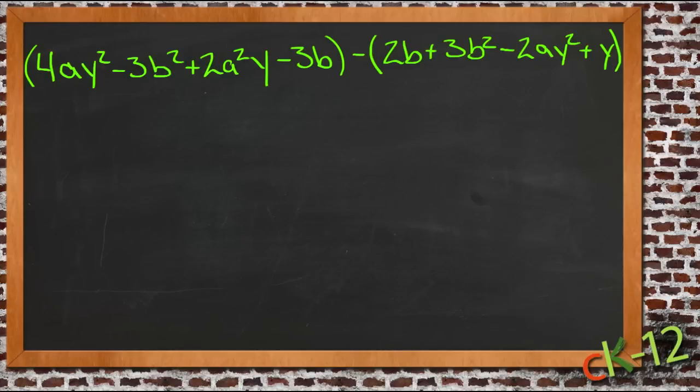4ay squared minus 3b squared plus 2a squared y minus 3b minus the polynomial 2b plus 3b squared minus 2ay squared plus y. So the first thing we'll do is just take a look at our first term. We have 4ay squared.